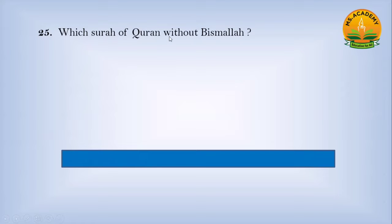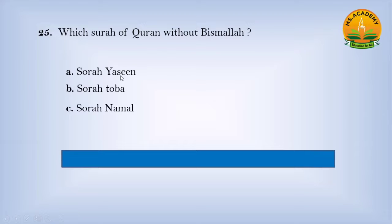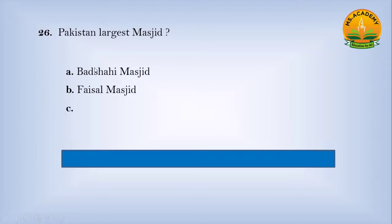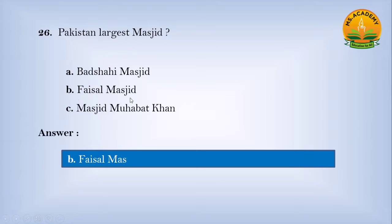Which Surah of the Quran is without Bismillah? Option A Surah Yaseen, option B Surah Toba, option C Surah Naml — answer is B, Surah Toba. Pakistan's largest mosque: option A Badshahi Masjid, option B Faisal Masjid, option C Masjid Mohabbat Khan — answer is B, Faisal Masjid.